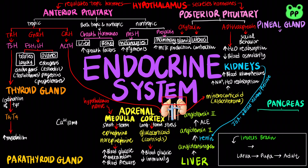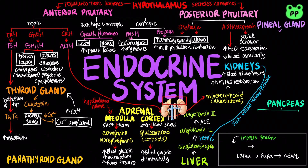Two antagonistic hormones regulate the homeostasis of calcium in our blood. When blood calcium level rises, the thyroid gland releases calcitonin, which stimulates calcium deposition in bones and secretion by kidneys, which in turn decreases the level of blood calcium. On the other hand, when blood calcium level decreases, the parathyroid gland releases parathyroid hormone, or PTH, which stimulates the release of calcium from bone and also stimulates the kidneys to activate vitamin D, which promotes intestinal uptake of calcium, thus increasing the level of blood calcium.